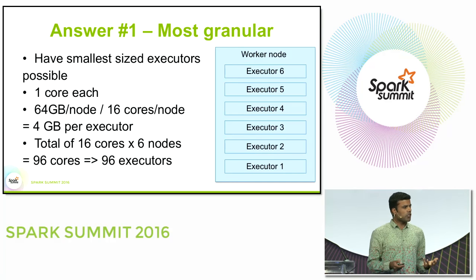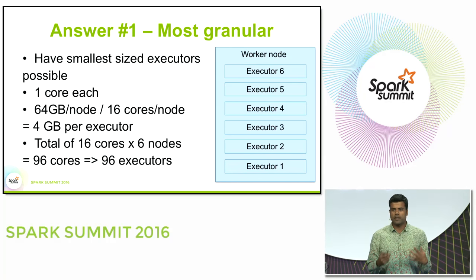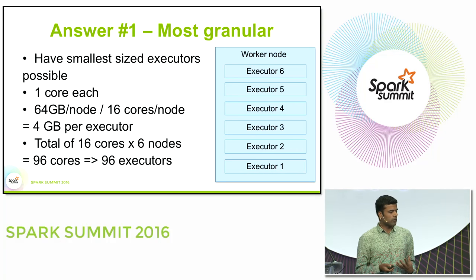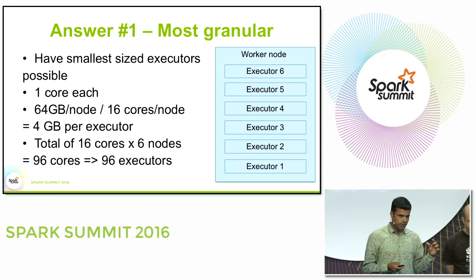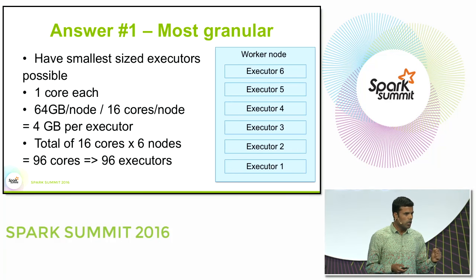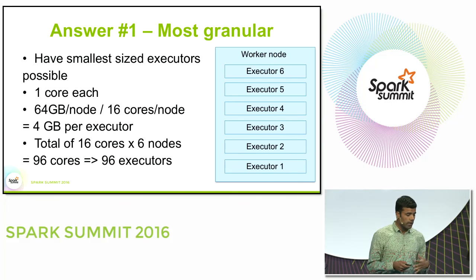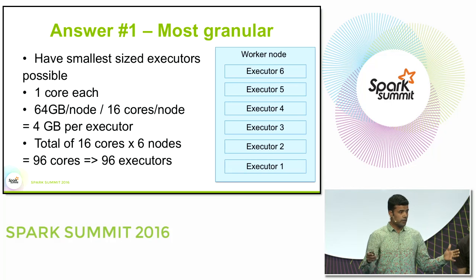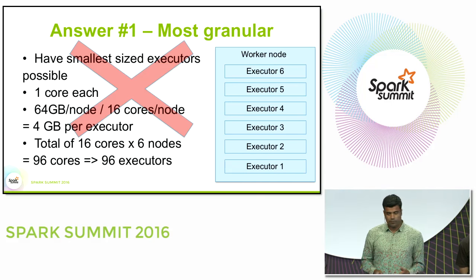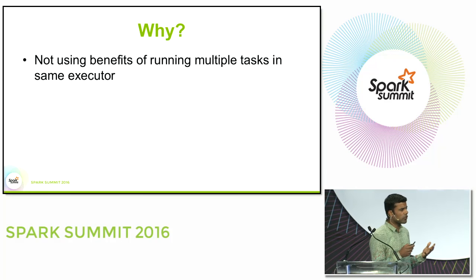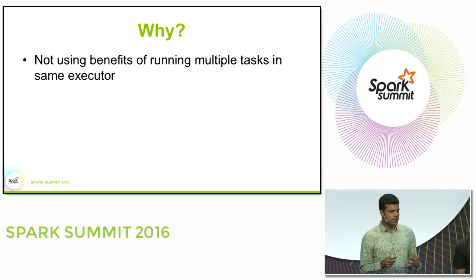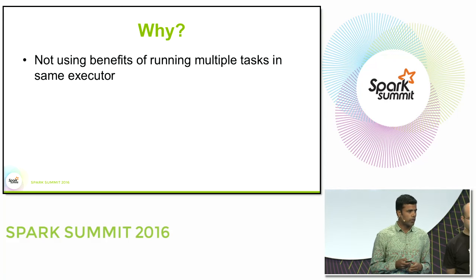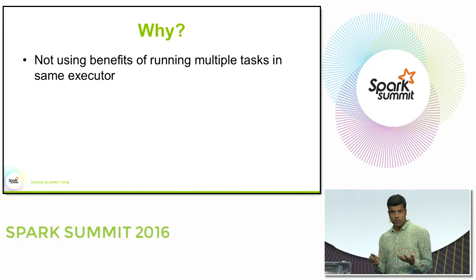The first answer you might come up with is to make executors as granular as possible — one core each. With 16 cores and 64 gigs of RAM, that means 4 gigabytes per executor and 96 cores total across the cluster. That turns out to be wrong, because you're not using the benefits of running multiple tasks in the same executor and sharing that cache.